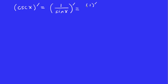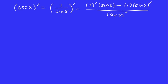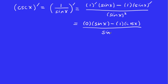The quotient rule: derivative of the numerator times the denominator left alone, minus the numerator left alone times the derivative of the denominator, all over the denominator squared. The derivative of one is zero, so zero times sin x goes away. One times the derivative of sin x is cosine x, and that minus sign stays, giving minus cosine x over sin squared x.